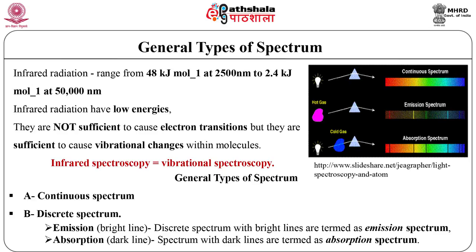In a discrete spectrum, we can observe only brighter or dark lines of very distinct and sharply defined colours or energies. There are two types of discrete spectra: emission spectra, i.e. bright lines, and absorption spectra, i.e. dark lines. Discrete spectra with bright lines are termed emission spectra and those with dark lines are termed absorption spectra.